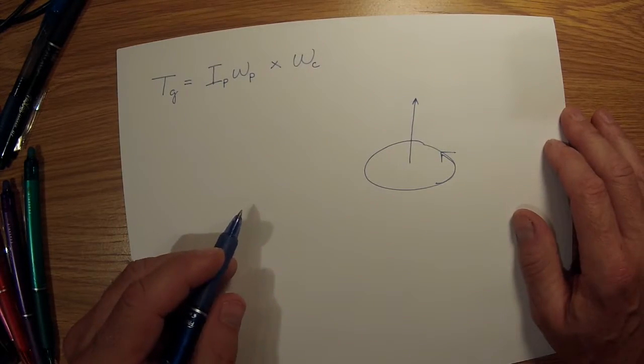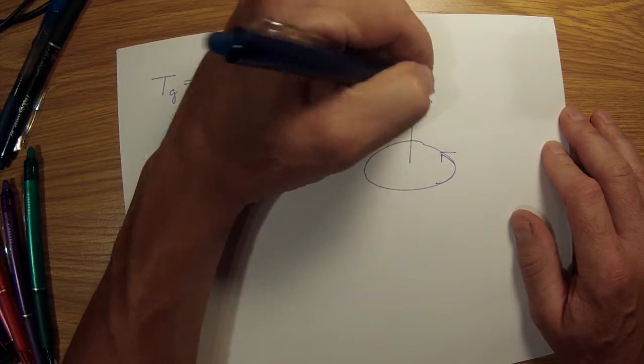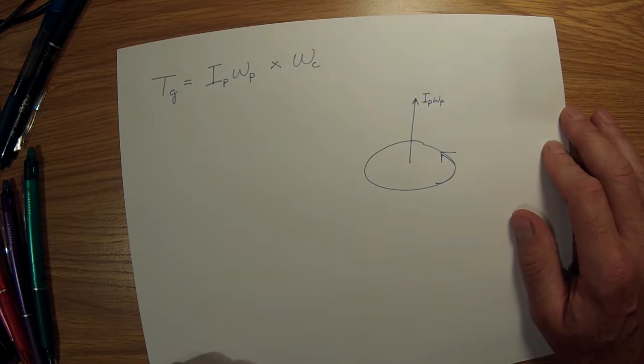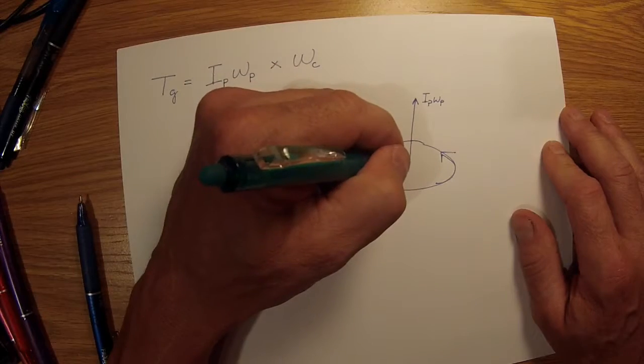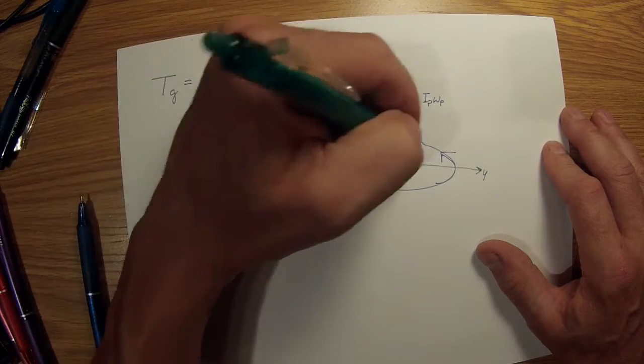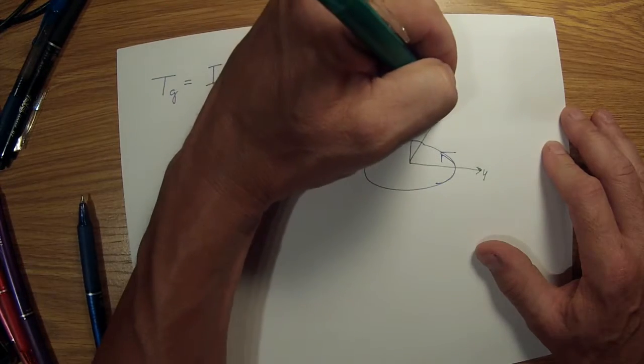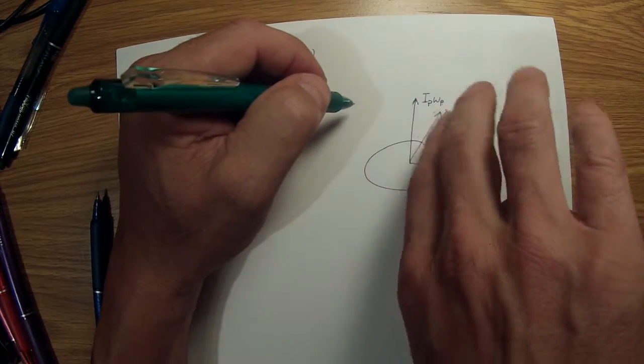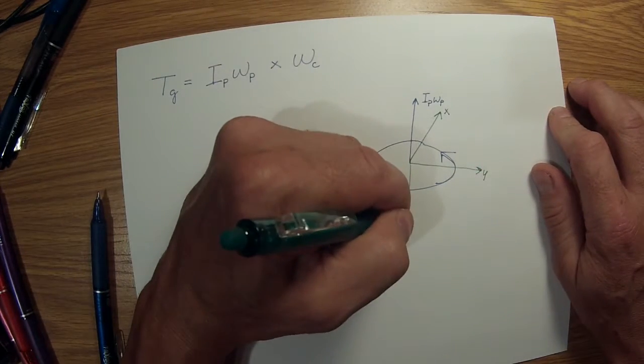It's also the same direction as the angular momentum vector, so we'll just write I_P Omega_P. That's our angular momentum vector. Now let's put a Y axis here and then an X axis, so the propeller's rotating in this XY plane.